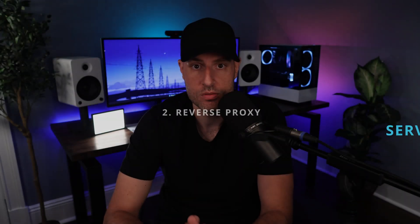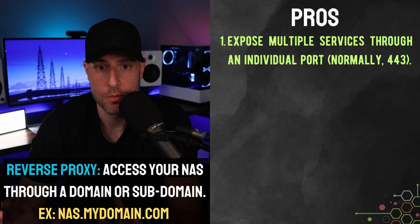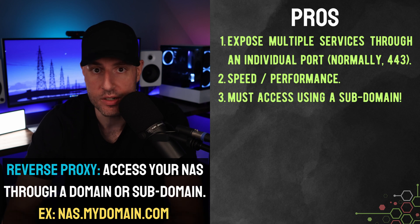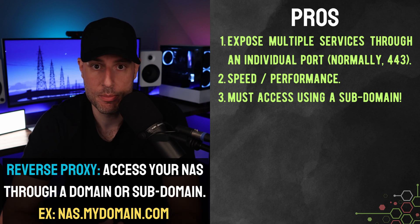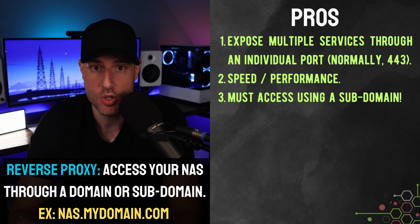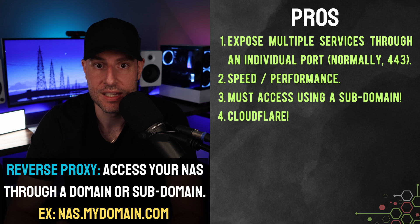The next option, very similar to DDNS, is a reverse proxy. What a reverse proxy allows you to do is expose multiple services on a single port — generally port 443. That's its main pro, but there are others. Almost all of the DDNS pros in terms of speed and performance apply here too. You also get an added security benefit: the user must know the exact subdomain you're using, otherwise they're brought to a generic page. Another potential benefit, if you're using your own domain, is that you can use Cloudflare.